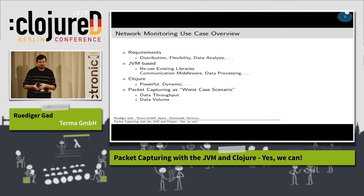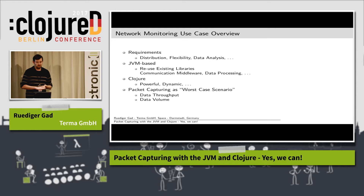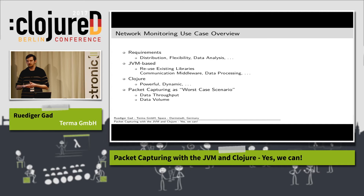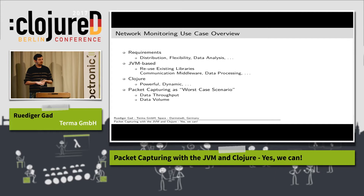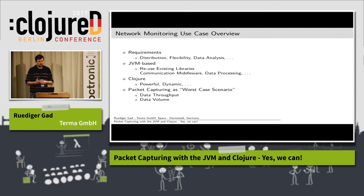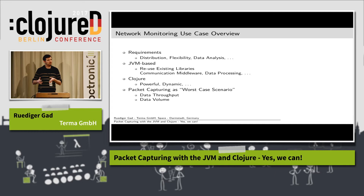I summarized this: requirements include distribution and flexibility, and of course you want to analyze the data. My approach was to reuse existing libraries as much as possible, and surrounding the JVM there is a huge ecosystem of libraries for communication middleware, data processing, and so on. That's my motivation for doing network monitoring on the JVM. I'm also happy to mention Clojure — it's my subjective opinion, but I think Clojure is very powerful. I liked what was said this morning, that one of Clojure's superpowers is homoiconicity, which actually helped a lot in the work I did here.